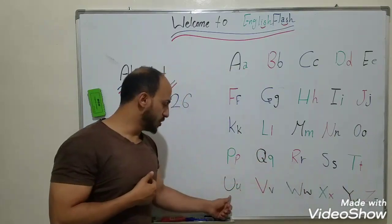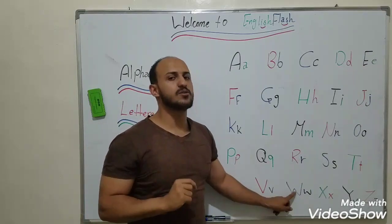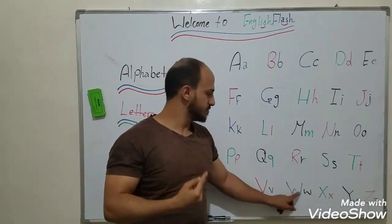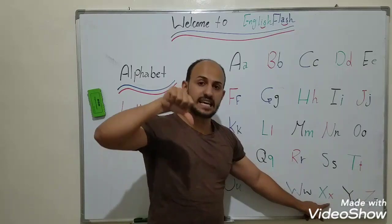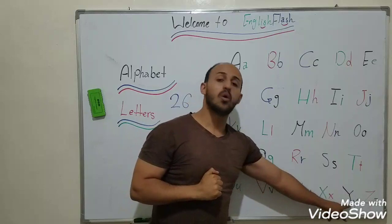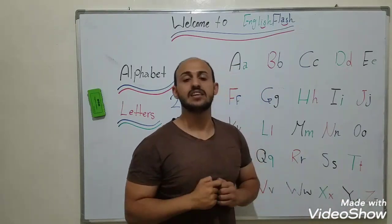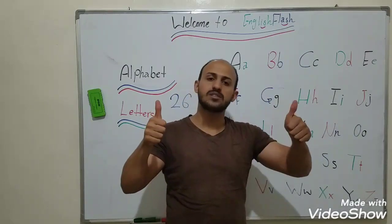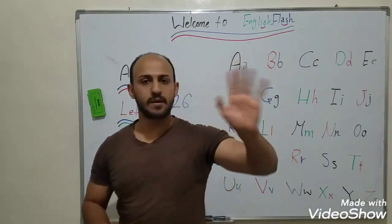U, V, W — not 'W W W', it's 'double-U' — X, Y, and Z or Zed. Both are correct. Thank you guys, see you, bye bye.